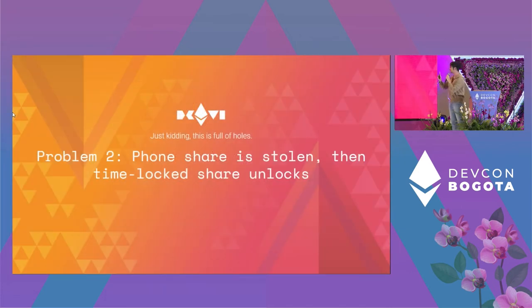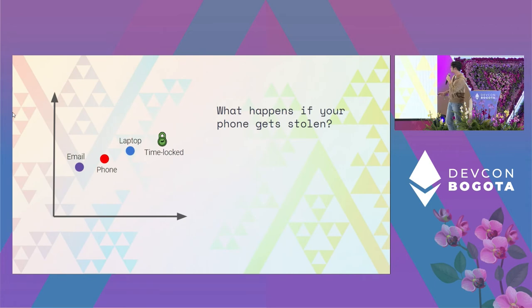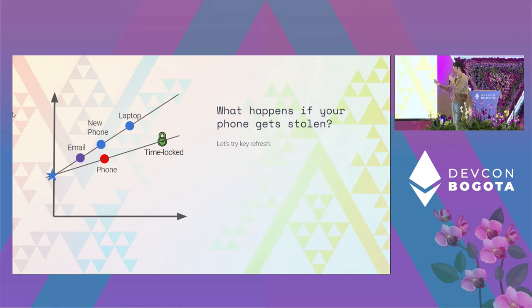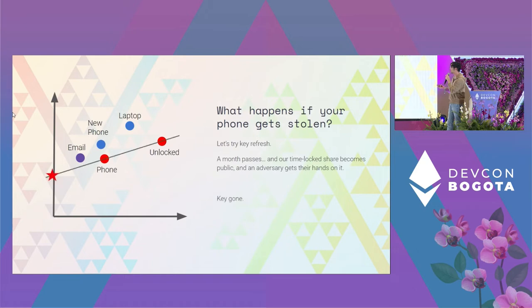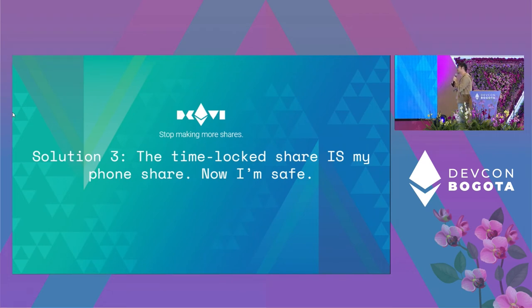But this is full of holes. What if a phone share is stolen and then the time-lock share unlocks? Your phone was stolen, so you do a key refresh and buy a new phone — new share on that phone. But the thief isn't going to delete the old share; they'll hold onto it. When a month passes and the time-lock expires, combined with the old stolen phone share, your key is gone.